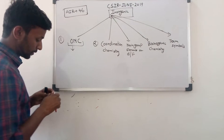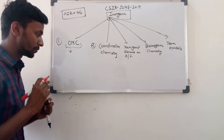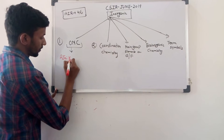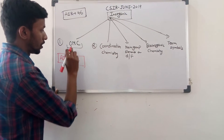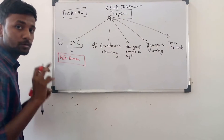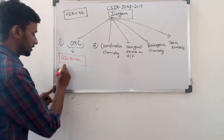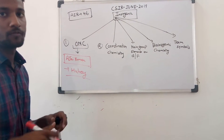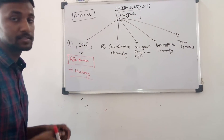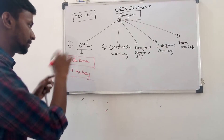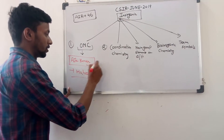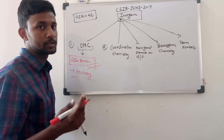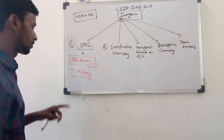This is all about organometallic chemistry and the book you should follow. Some of you may have heard the name - that book is Ajay Kumar. You should read this book for organometallic chemistry first, then go to Huey. I have analyzed CSIR papers from previous years including the December exam and the June exam I appeared in, and I have not found any question outside this book. Some questions come directly from this book.